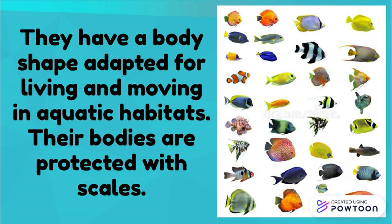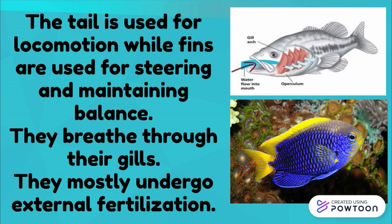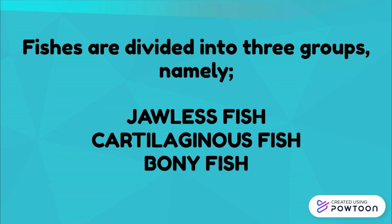Fish use their tail for locomotion while fins are used for steering and maintaining balance. They breathe through their gills and mostly undergo external fertilization. Fishes are divided into three groups: jawless fish, cartilaginous fish, and bony fish.